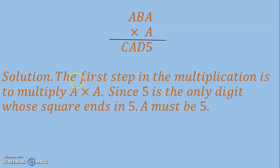Solution: The first step in the multiplication is to multiply A × A. Since 5 is the only digit whose square ends in 5, A must be 5.